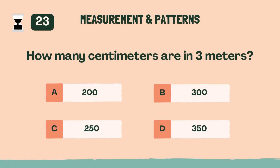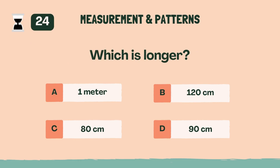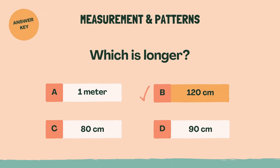How many centimeters are in 3 meters? B, 300 centimeters. Which is longer? B, 120 centimeters.